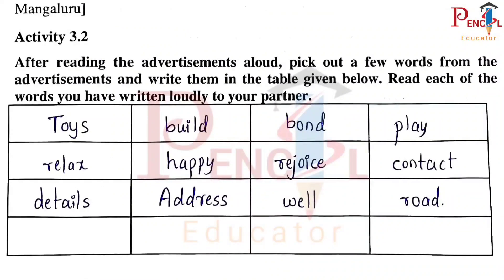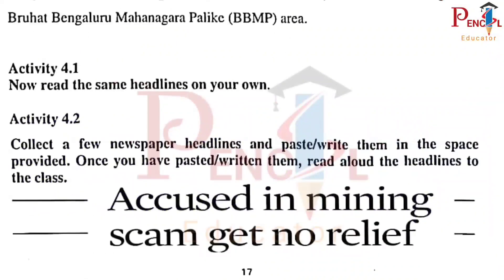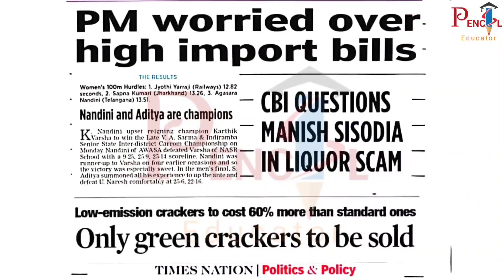Activity 3.2 — Newspaper Headlines: Accused in mining scam get no relief. PM worried over high import bills. CBI questions money Sisodia in liquor scam. Nandini and Aditya are champions. Only green crackers to be sold.